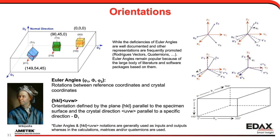You will see Euler angles and HKL-UVW notation a lot. Euler angles do have some deficiencies, especially as the middle angle phi approaches zero, but they are used a lot in the literature with a lot of historical use, so we continue to use them. There are some better descriptions also available, such as Rodrigues vectors, quaternions, or some others.